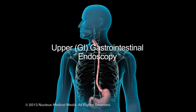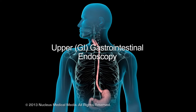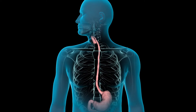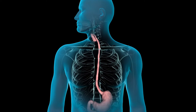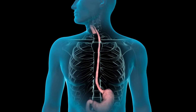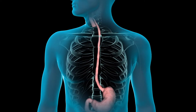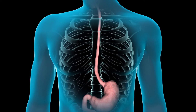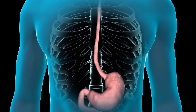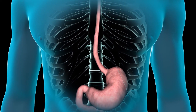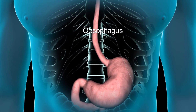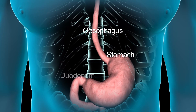An upper GI endoscopy is a procedure that allows your doctor to view the mucosal lining of the upper portion of your gastrointestinal tract. This includes your esophagus, stomach and your duodenum.